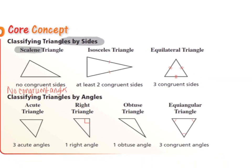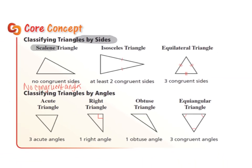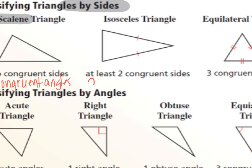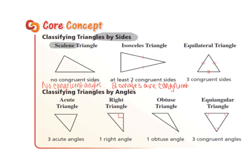If we're talking about an isosceles triangle, that means that two sides are the same, and it also means that two angles are the same or congruent. When they start marking things as congruent, they put the little tick marks on there. So if you have one tick mark here and one tick mark here, that indicates that those two sides are the same or congruent to each other.